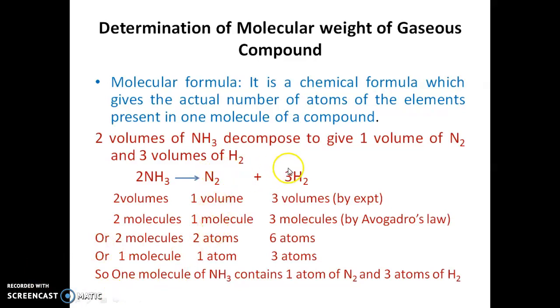You know nitrogen is diatomic, hydrogen is diatomic. So, we get two atoms of nitrogen and six atoms of hydrogen. Divide by two, you will get one molecule contains one atom of nitrogen and three atoms of hydrogen.